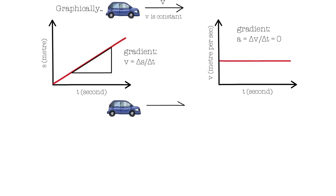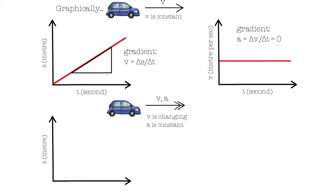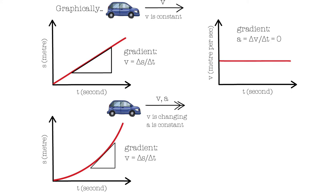Now let's say that there's a car travelling at V meters per second to the right, but this time with a constant acceleration. Note that the acceleration is represented using a double arrow, pointing in the direction of its motion. If an object is accelerating, our displacement-time graph will show a curve, curving upwards. You can see that the gradient changes over time. If you wanted to find the velocity of the car at a given point, you can do this by drawing a tangent at the point and then calculating its gradient.